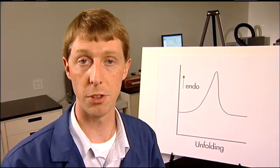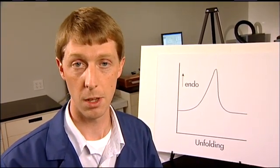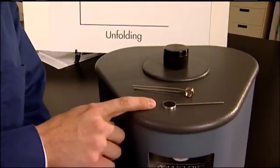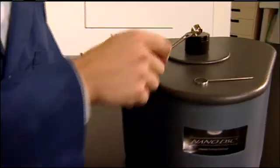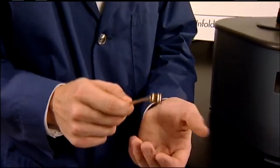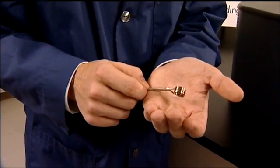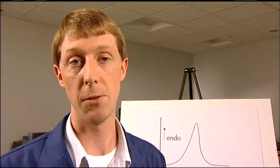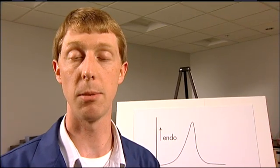Microcalorimeters are important tools in protein stability studies. There are typically two cell designs: the coin-shaped cell and the capillary cell. The capillary cell is favored over the coin-shaped cell due to its ease of sample loading, ease of cleaning, and high sensitivity. But the most overlooked advantage is the fact that it is designed to inhibit protein aggregation.